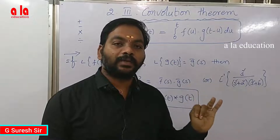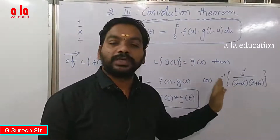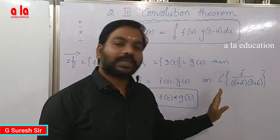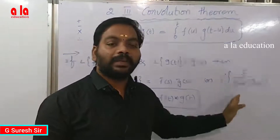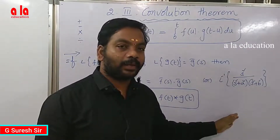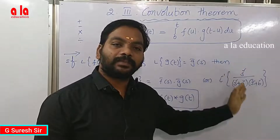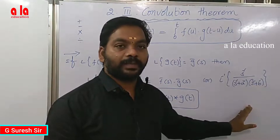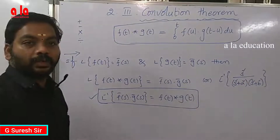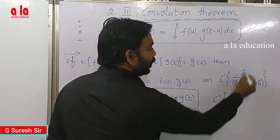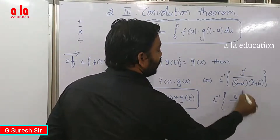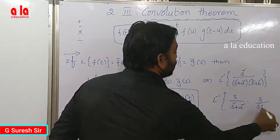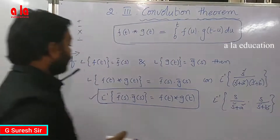We have four constant values: A, B, C, and D. We compare the coefficients of s to the power 4, s cubed, s squared, s, and the constant term to find out A, B, C, D. Once the values are found, the inverse Laplace transform is computed. This problem is solved using convolution: L-inverse of s over (s squared plus a squared) into s over (s squared plus b squared).